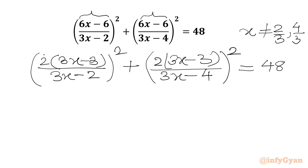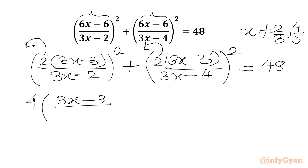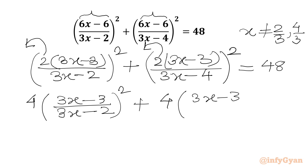Now this 2 will come out as 4. So we will write here 4 times (3x minus 3) over (3x minus 2), whole squared, plus 4 times (3x minus 3) over (3x minus 4), whole squared, equal to 48.